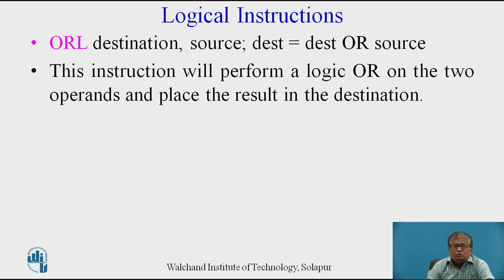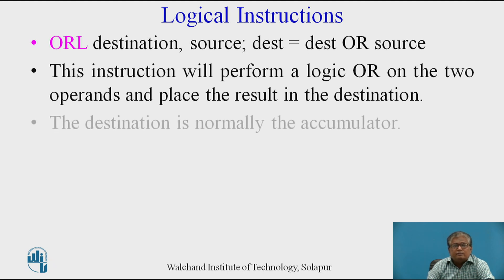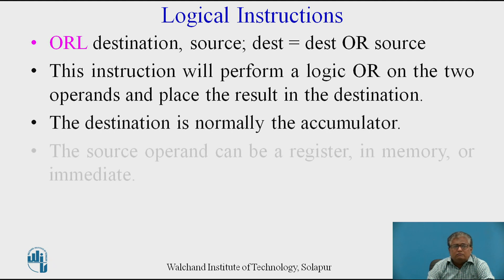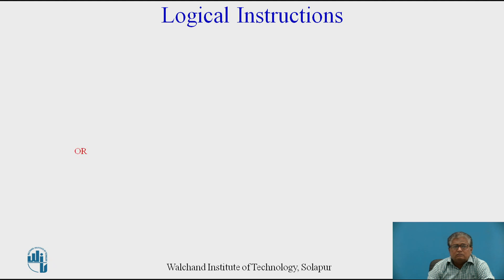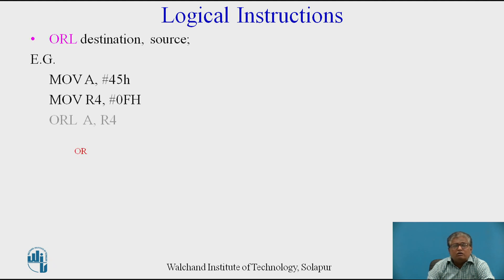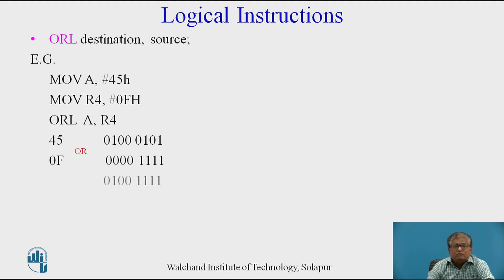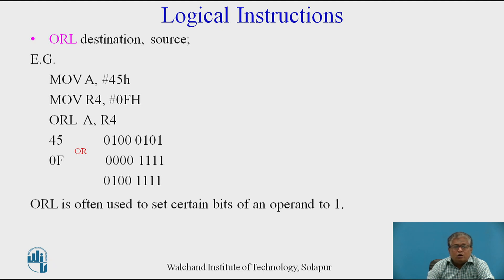The result is placed in the destination, which is the accumulator. The source operand can be a register, memory, or immediate. Example for ORL instruction: ORL A, R4. The value in R4 is 0FH, which will be ORed with the value in register A, that is 45H. The binary representations of 45H and 0FH are shown, and the OR operation result is 0100 1111, which gets stored in register A. The ORL instruction can be used to set certain bits of an operand to 1.